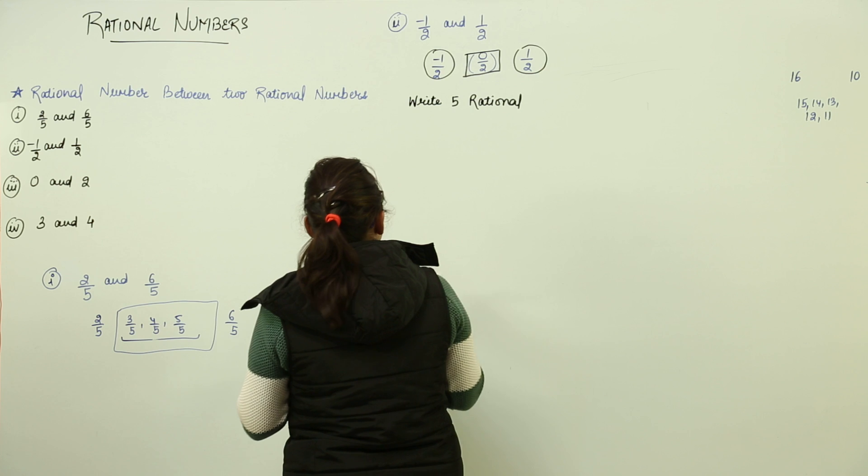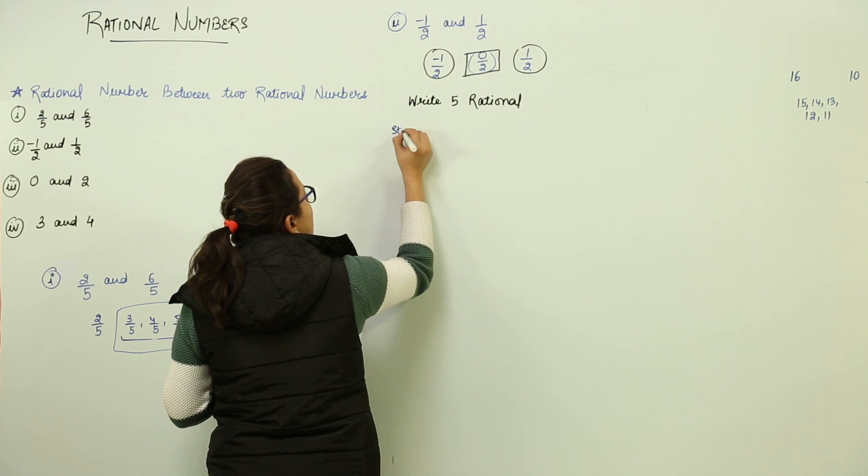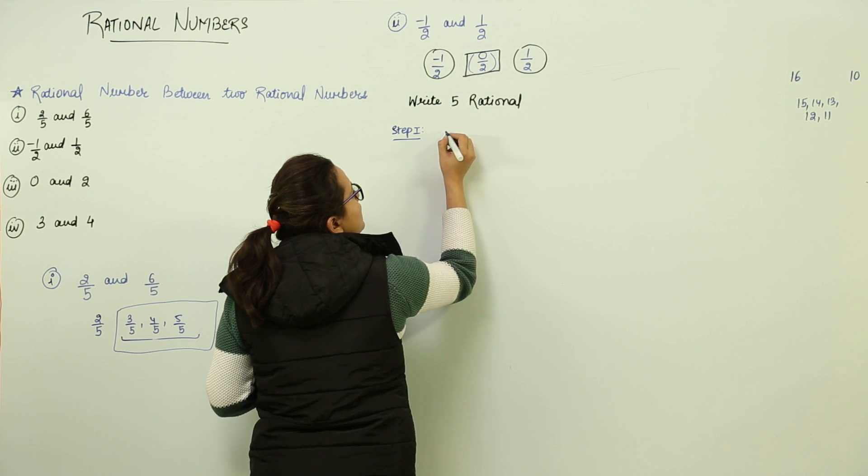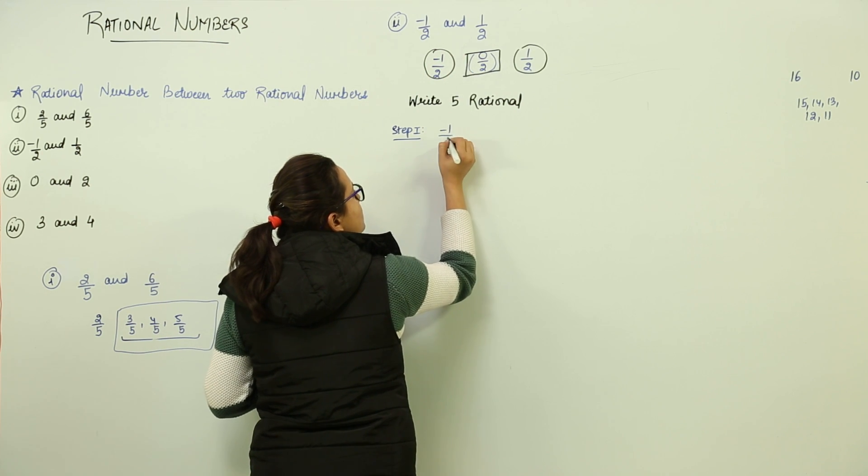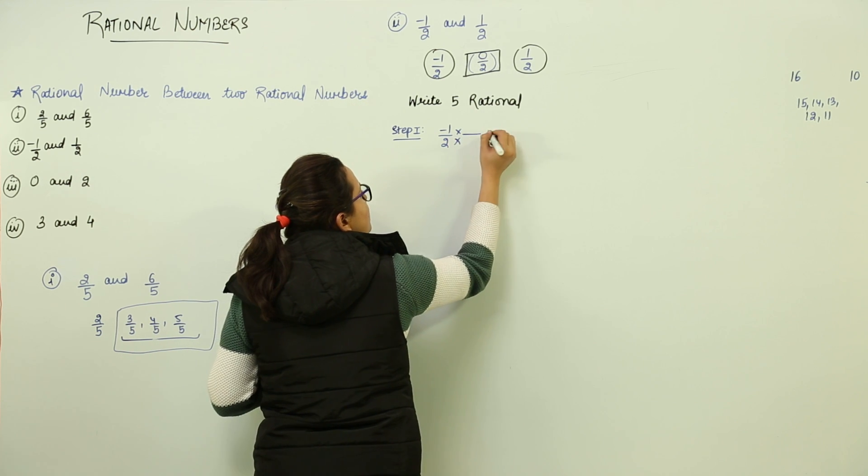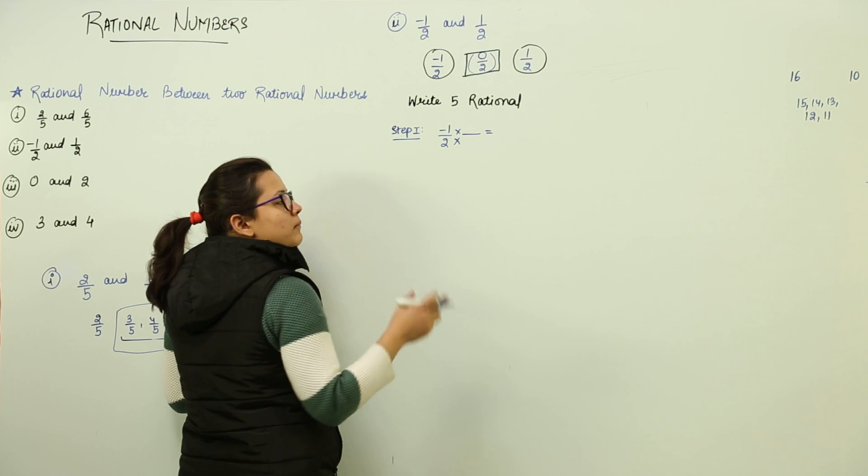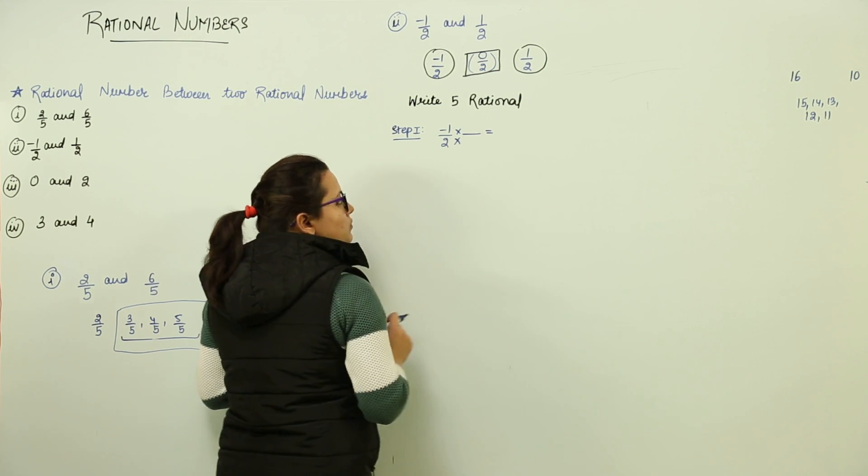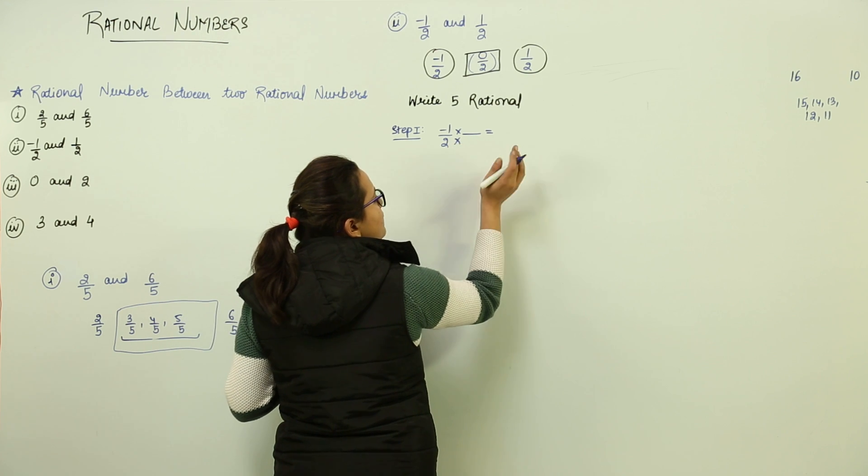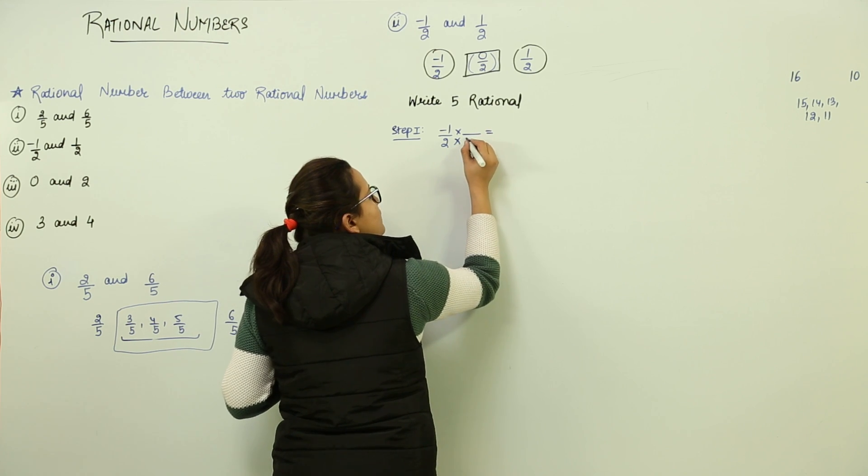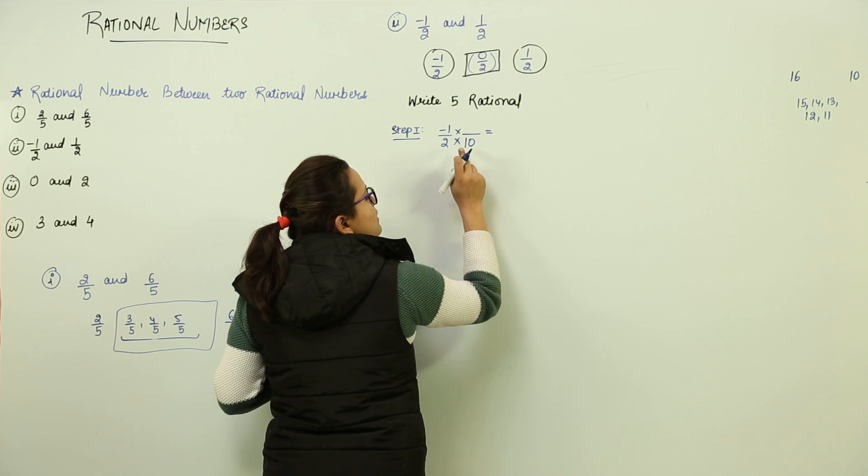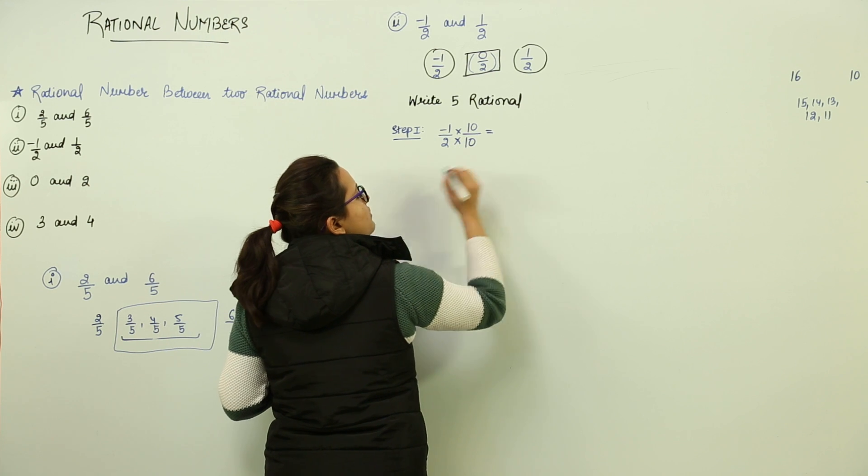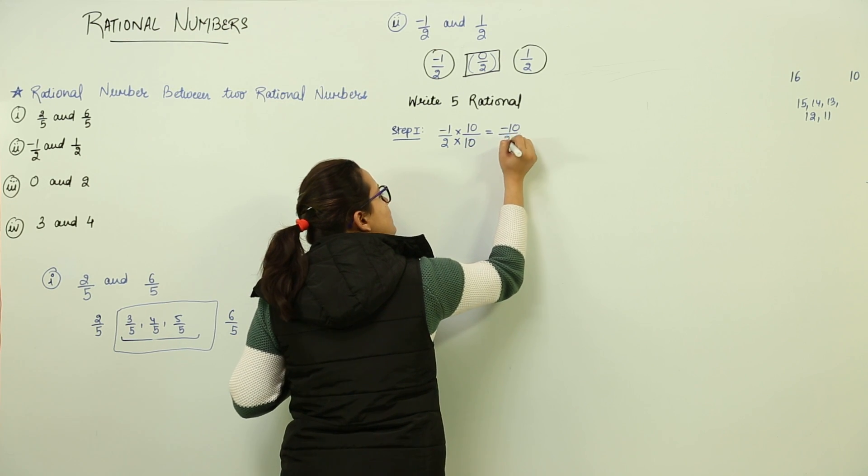Now what you can do is first your step one would be to actually make the denominator same. Now you can make the denominator same by multiplying them with any number you want. But make sure whatever number you multiply with the denominator is the number to be multiplied with the numerator. For example, I can multiply it with any number I want. Say I multiply it with 10. Because I am multiplying 10 in the denominator, 10 will be multiplied in the numerator. What do I get? Minus 10 by 20.